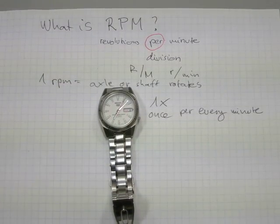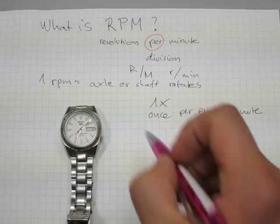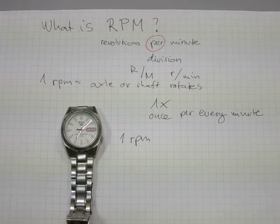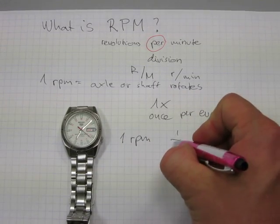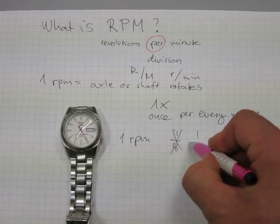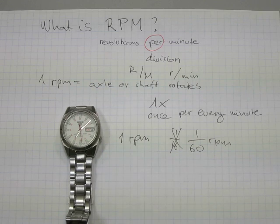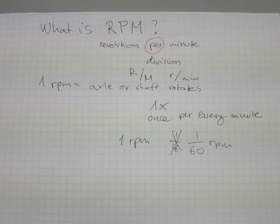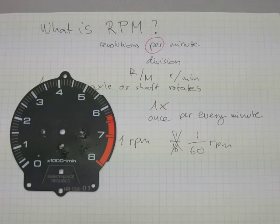So the second hand is rotating at one RPM — not exactly a breakneck speed. Your minute hand is rotating slower, at one-sixtieth RPM, because it takes 60 minutes to rotate once. And the hour hand is rotating even slower than that.